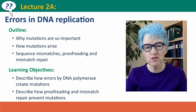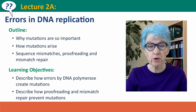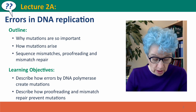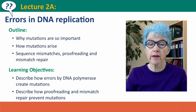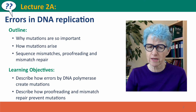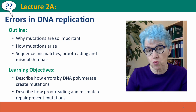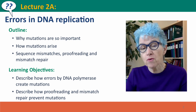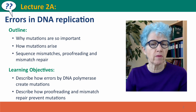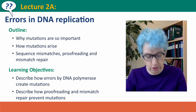Hi everyone, welcome back to Useful Genetics. This is the start of Module 2, where we're talking about mutations. In this first lecture, we're going to talk specifically about errors in DNA replication. We'll first introduce why we care so much about mutations, then talk about how mutations arise, and about the events that determine whether a mistake by DNA polymerase actually turns into a mutation.